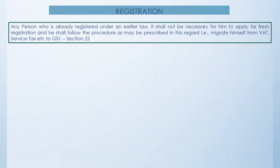Now let us come to registration under section 22. Any person who is already registered under the earlier law need not apply for fresh registration. They will be automatically migrated under GST from the various VAT, service tax, or excise duty regimes. They have to only select an option whether they want to continue or not — that means if the turnover is below the limit, they may decide not to continue depending on the stock analysis which has to be done.